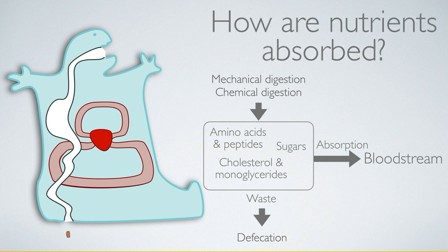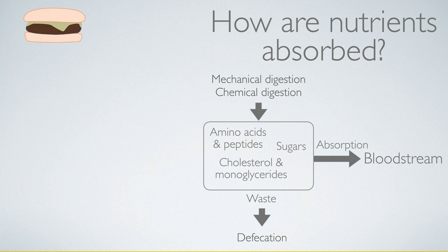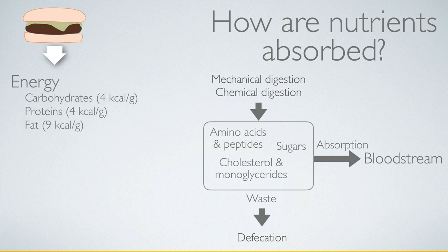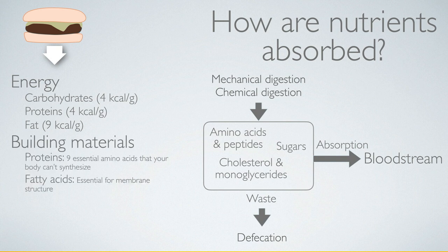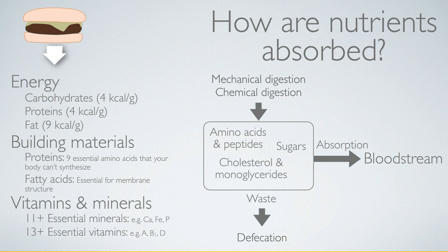A secondary question is how nutrients are further broken down through digestive enzymes in the small intestine. From the food you eat, you get energy — most densely from fat, which has more than twice the energy density of carbohydrates and proteins. There are nine essential amino acids your body cannot synthesize, so they must come from food. Fatty acids are essential for membrane structure and must also come from food, along with many vitamins and minerals.